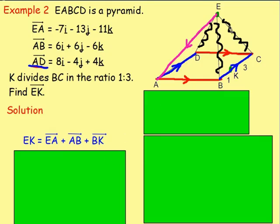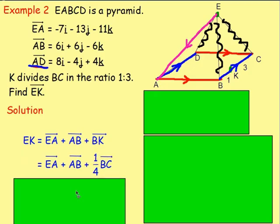We are told EA and AB, but we aren't directly told BK. However, we are told that K divides BC into the ratio 1 to 3, meaning one part here and three parts here — altogether four parts. So every part is a quarter of the length. Because it's just one part from B to K, it's going to be a quarter of the length from B to C. So BK is going to be a quarter of the vector BC.